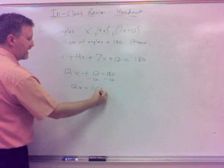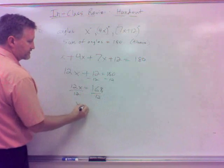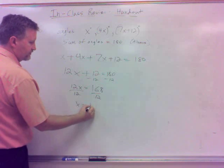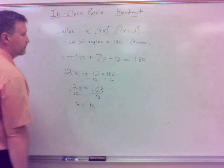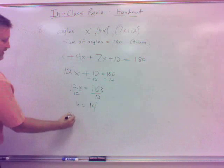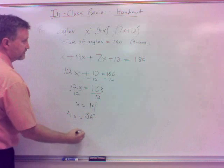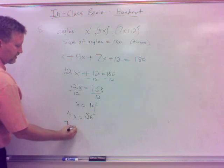So what do we got here? 1x, 4x, and 7x. It's 12x. Plus 12 equals 180. Subtract the 12, and we've got 12x equals 168. So we divide by 12, and we've got x equals, looks like, 14.